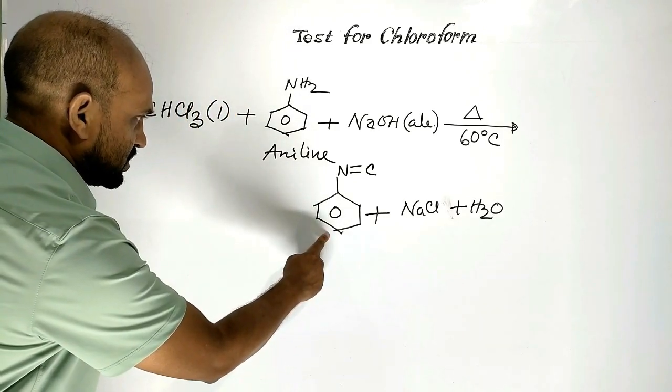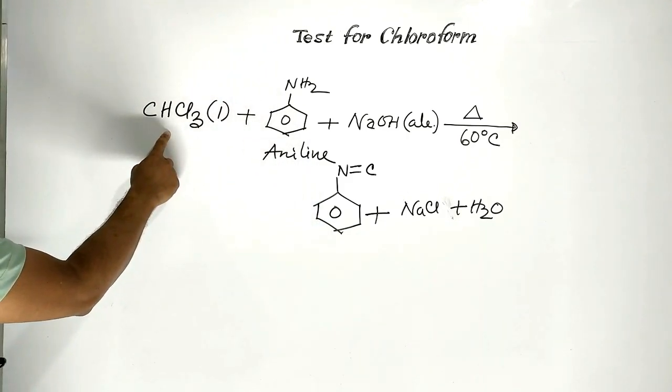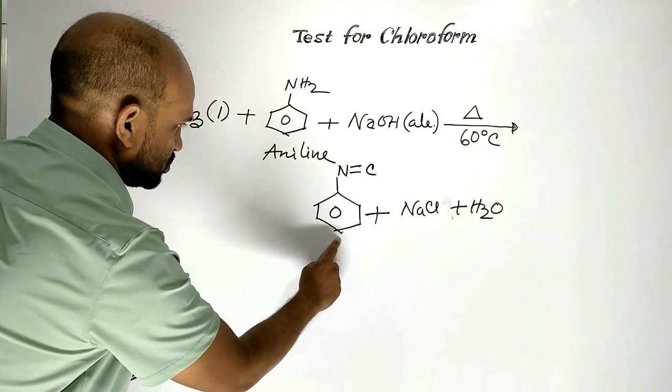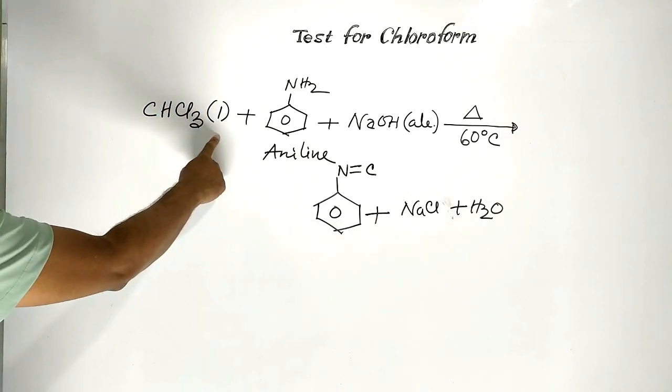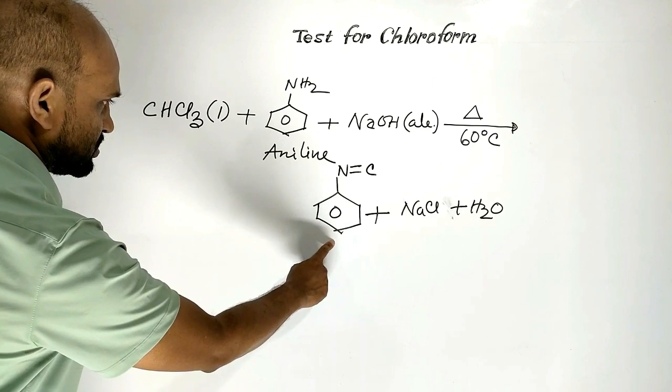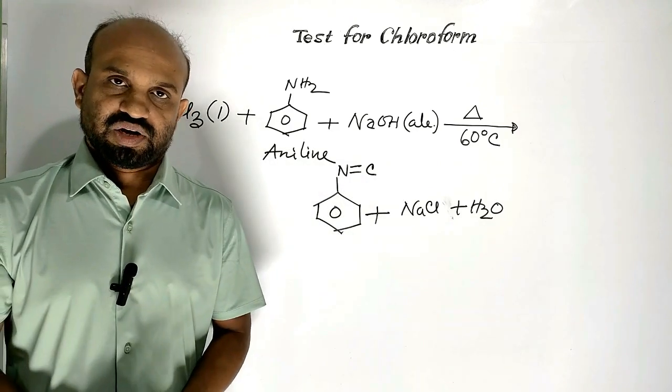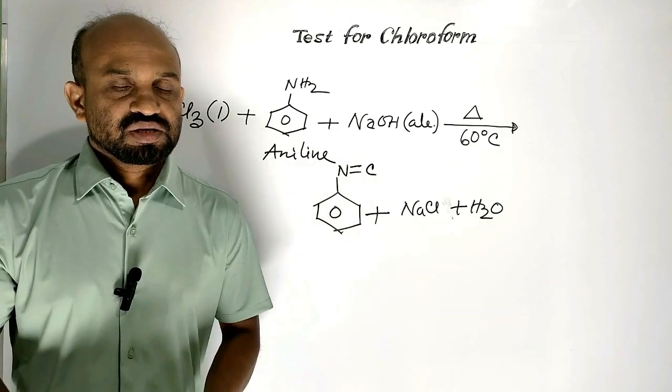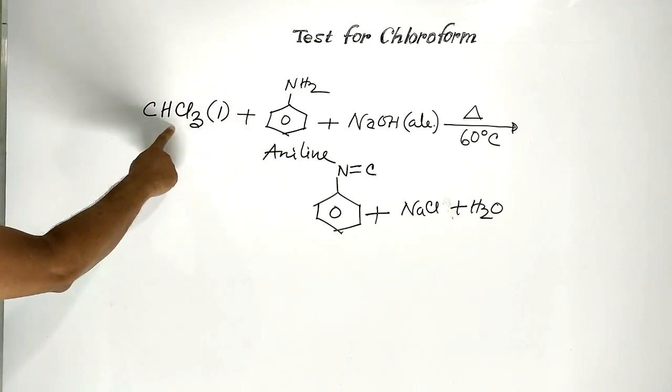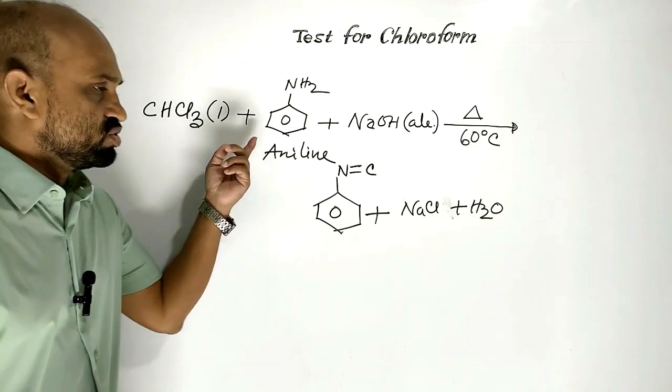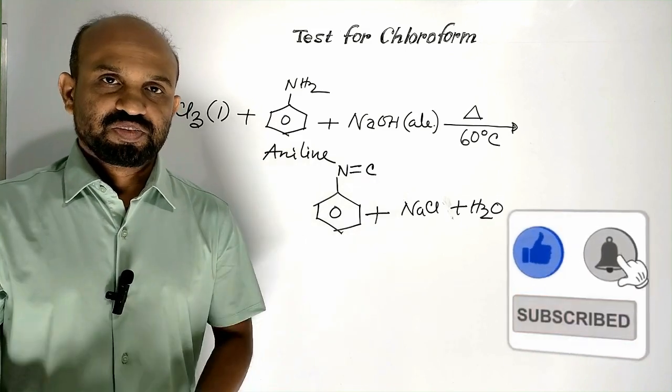This unpleasant smell of Phenyl isocyanide proves the presence of chloroform. As this is known as Cabylamine as well, this reaction is also known as Cabylamine reaction. Through Cabylamine reaction, chloroform is identified. The unpleasant smell of Phenyl isocyanide indicates the presence of chloroform. This reaction is used for the test of aniline as well. This is simply a test for chloroform.